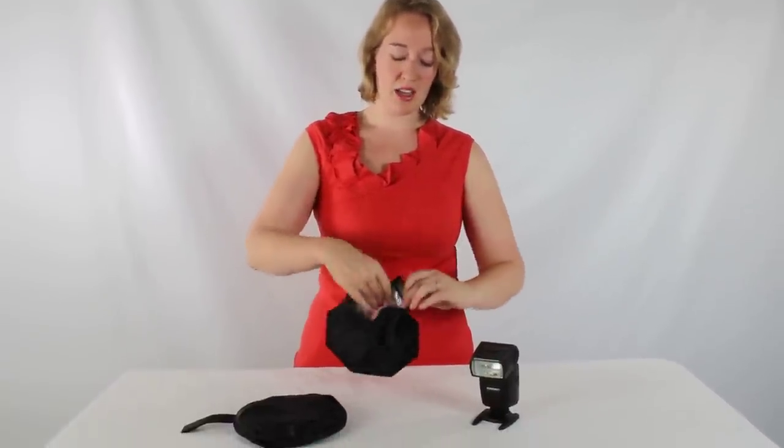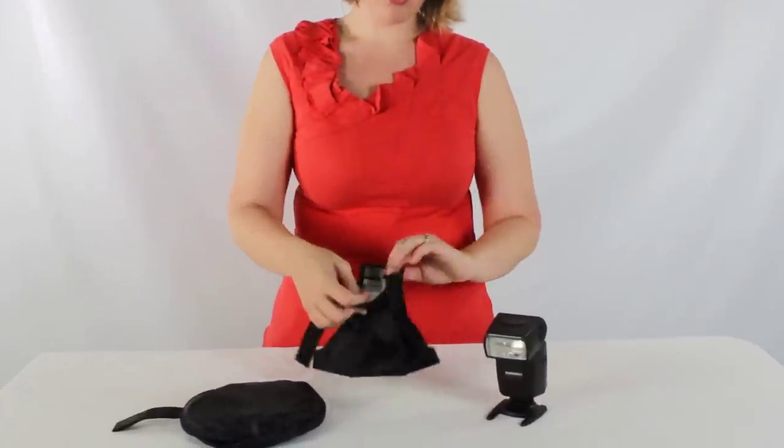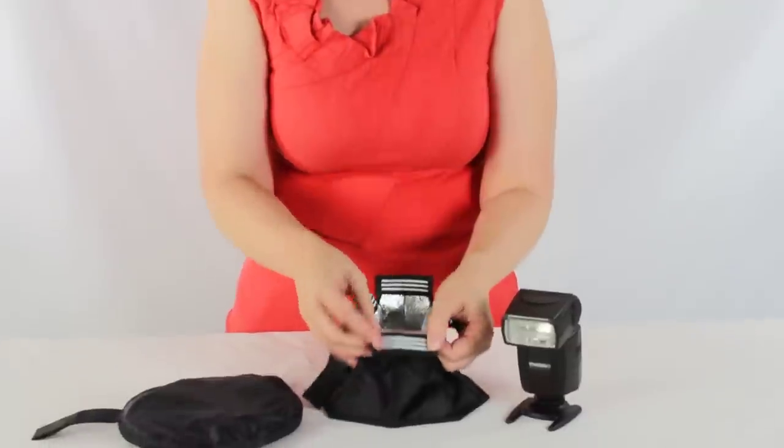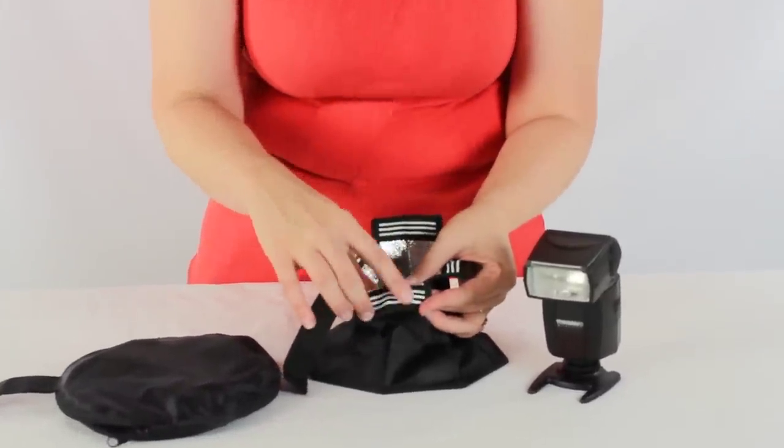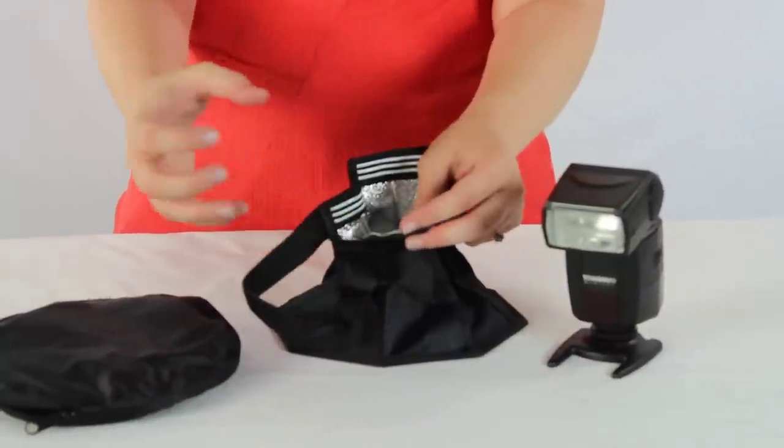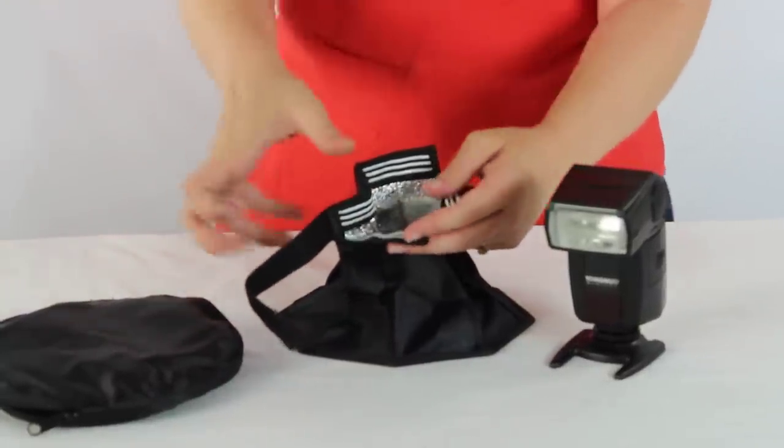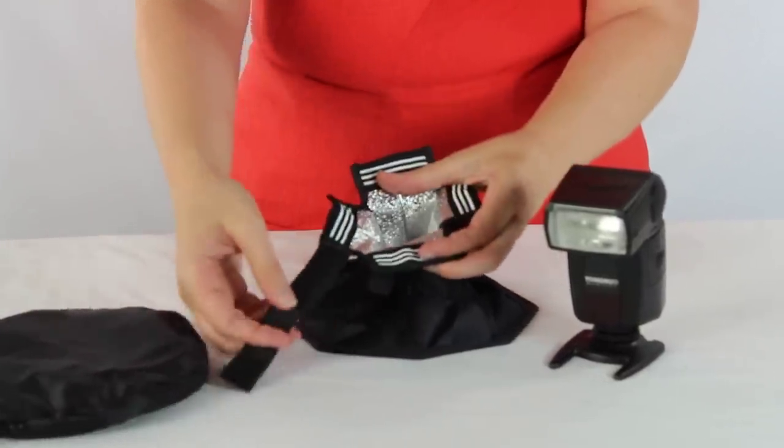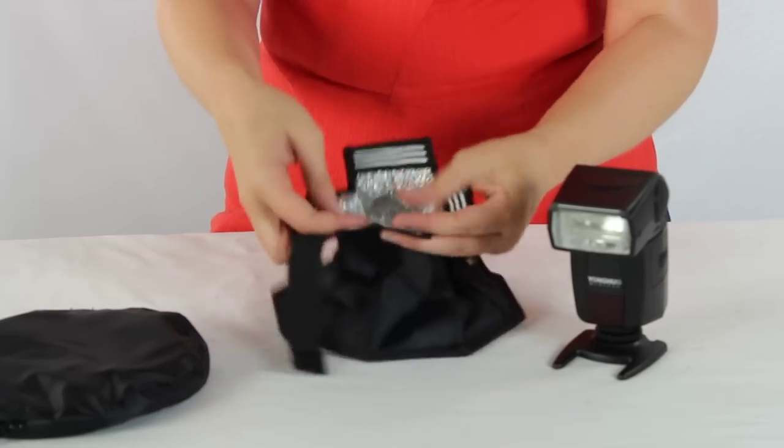Now when you're looking at this, you'll notice it has four flapbacks. On these particular flapbacks, I want you to note that there's a rubberized grip here that's going to help keep this in place on the front of your speedlight. Then of course you have the one flap that's going to wrap around.